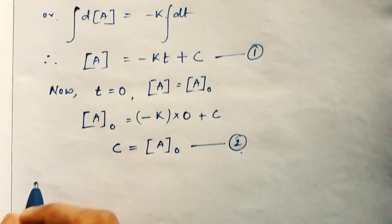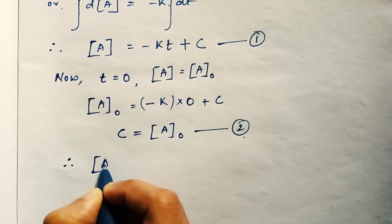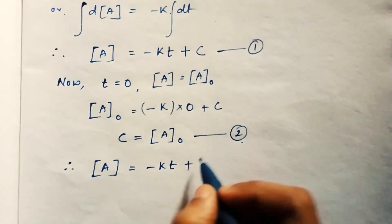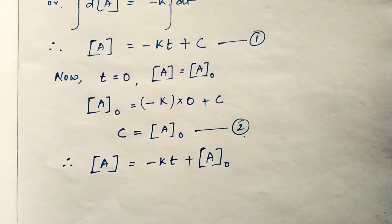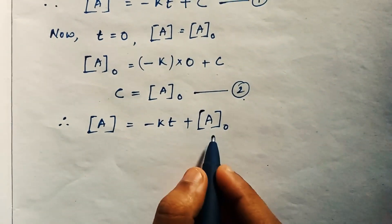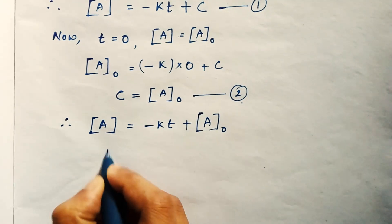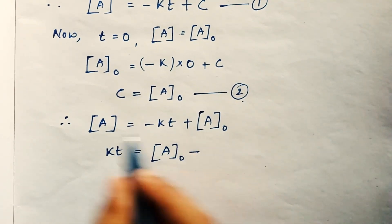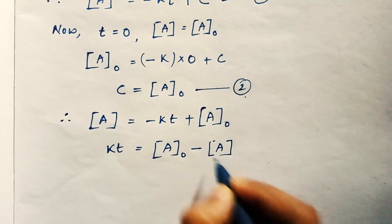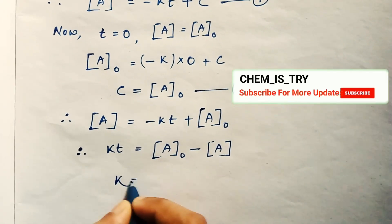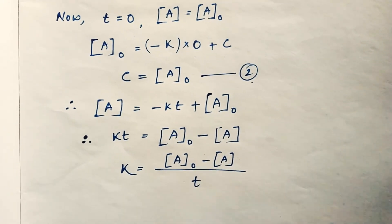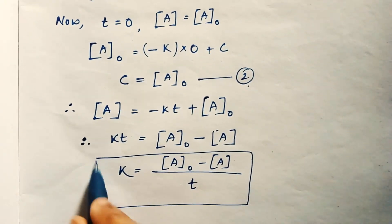Substituting C = A₀ back into equation one, we get: A = -kt + A₀. Rearranging by moving kt to the other side: kt = A₀ - A, and therefore k = (A₀ - A) / t. This is the rate constant formula for a zero-order reaction.